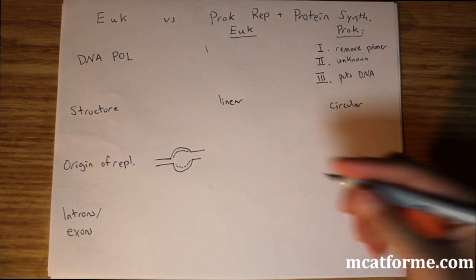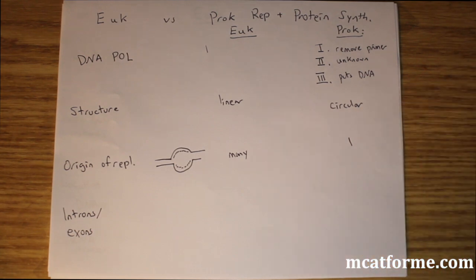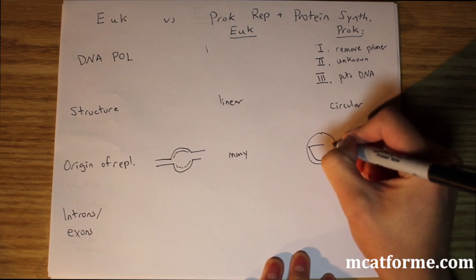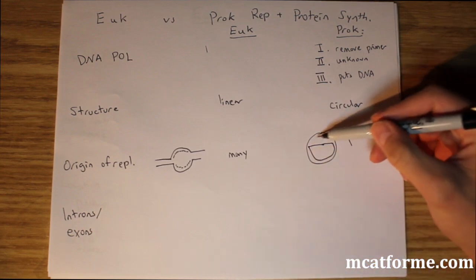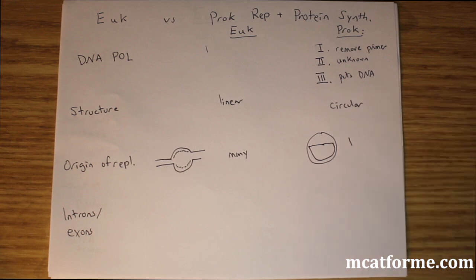In eukaryotes, we have many origins of replication. In prokaryotes, we have only one. In prokaryotes, this is called theta replication. We're replicating on this side and down like that, and it looks like the Greek letter theta. The reason eukaryotes have many and prokaryotes have one is that the eukaryotic genome is much bigger, so you need many different origins of replication.